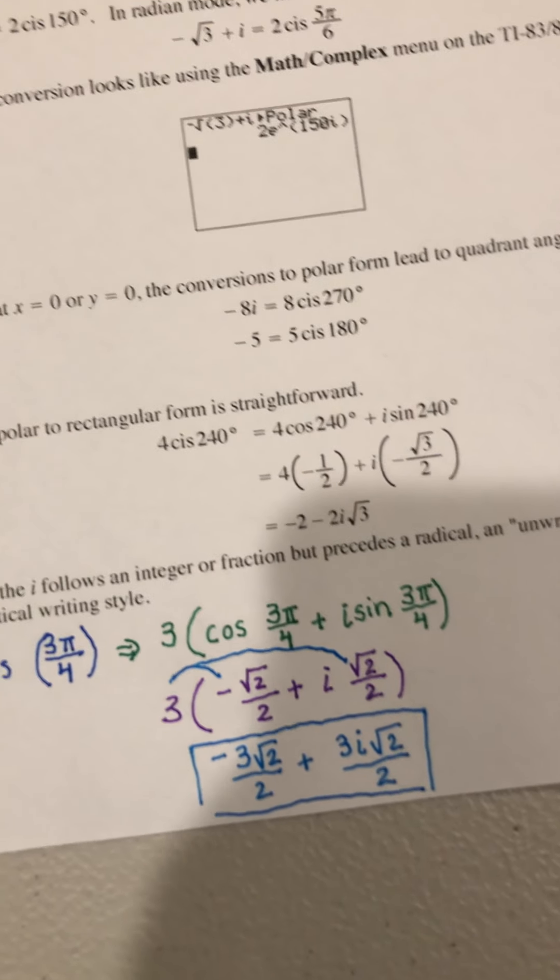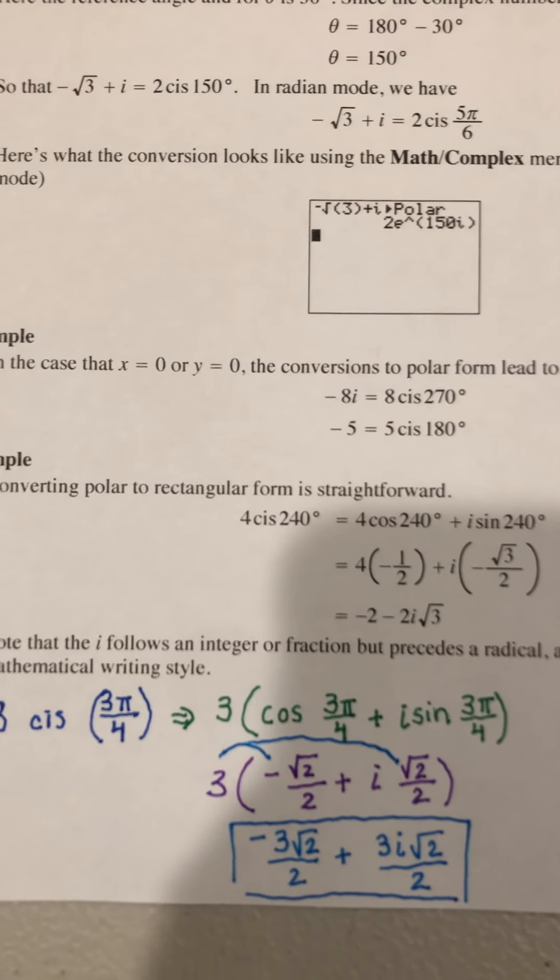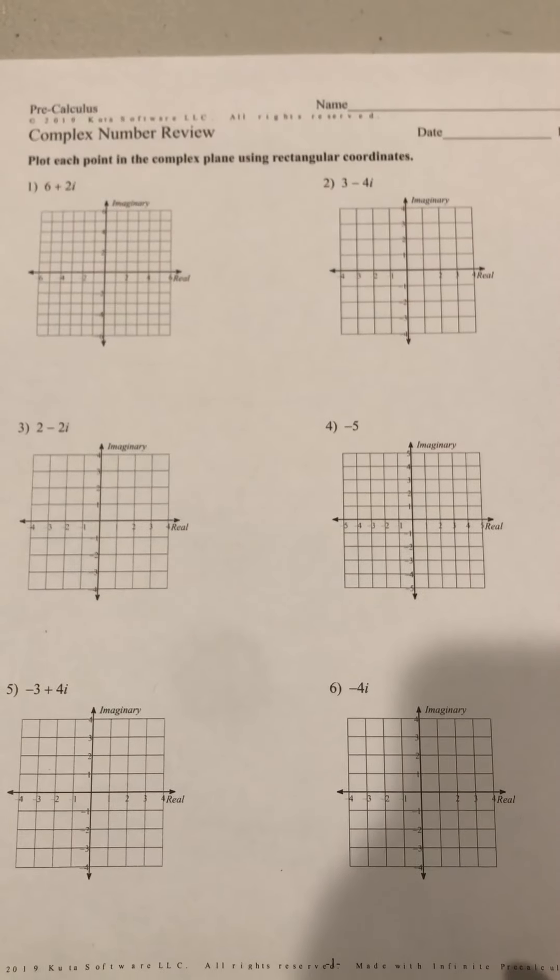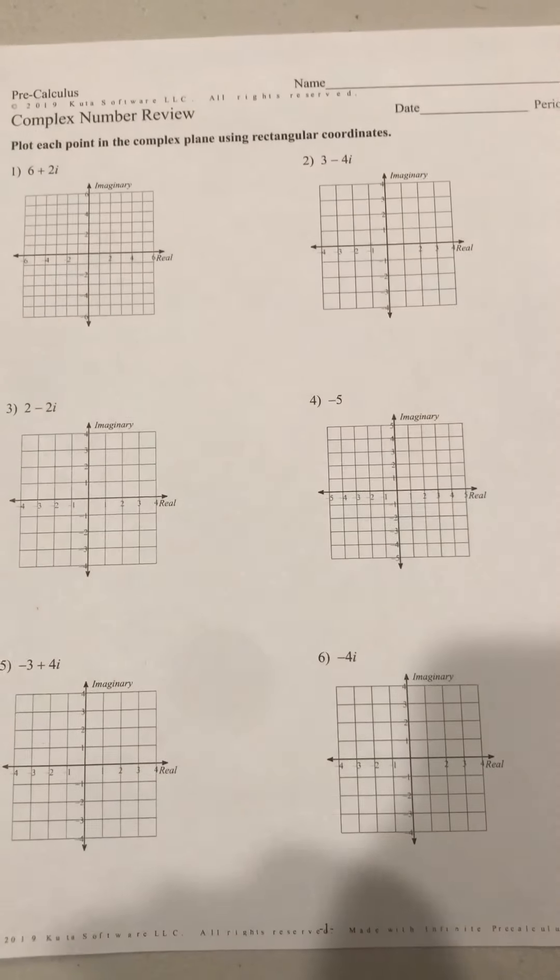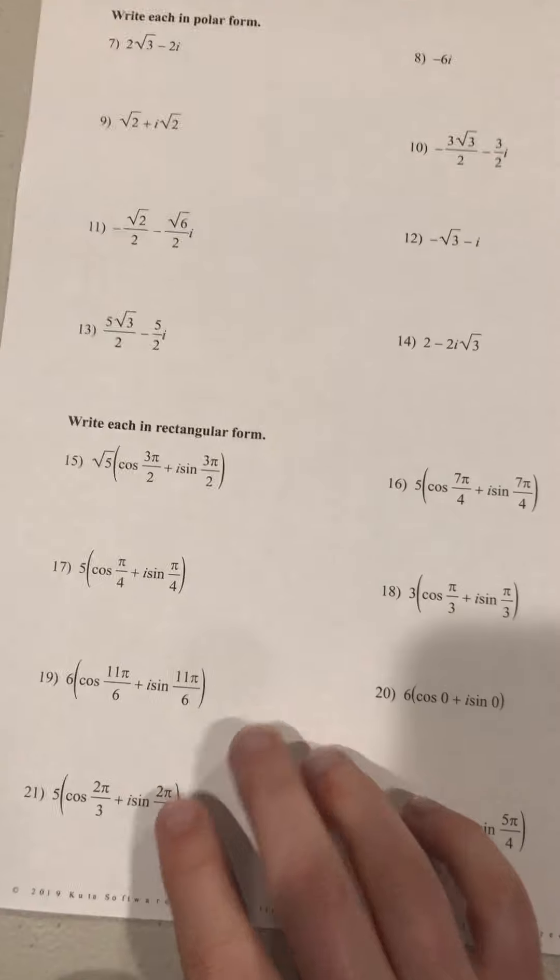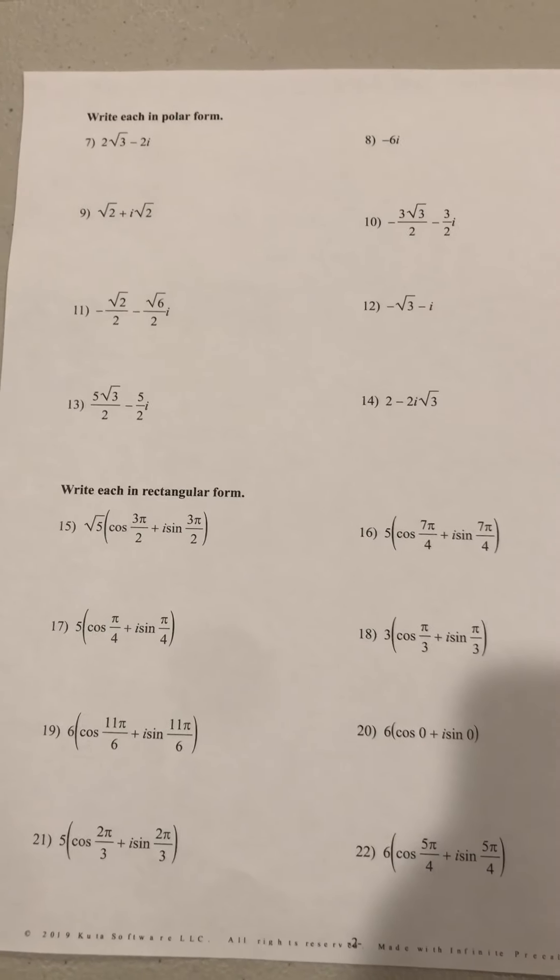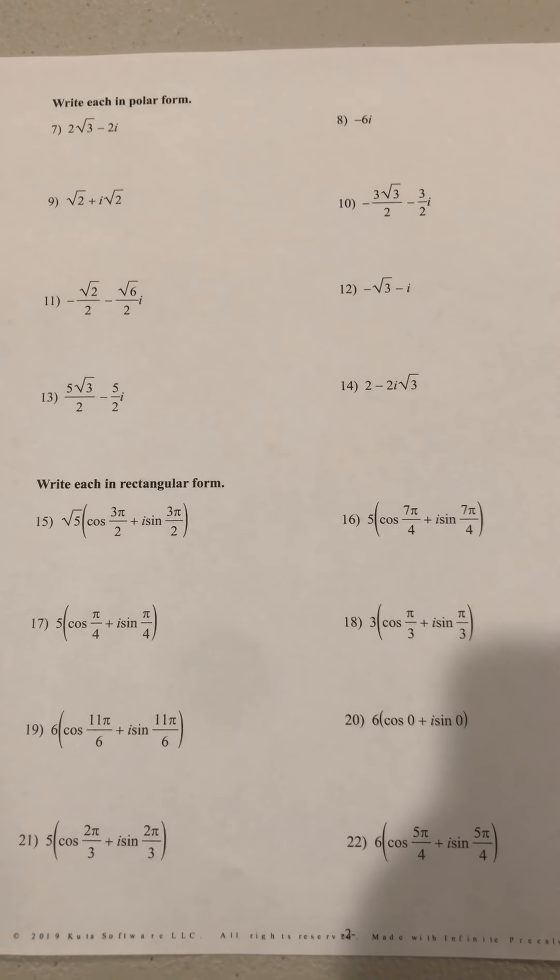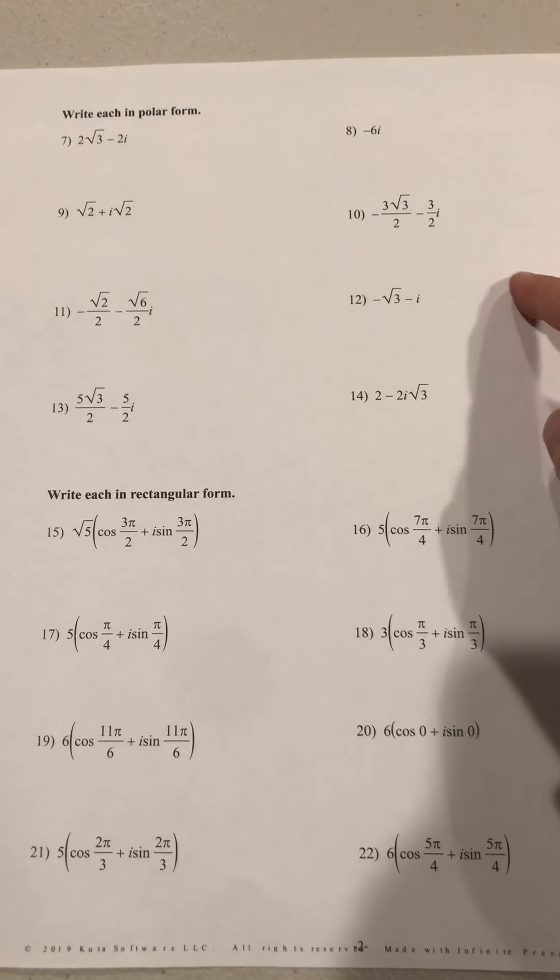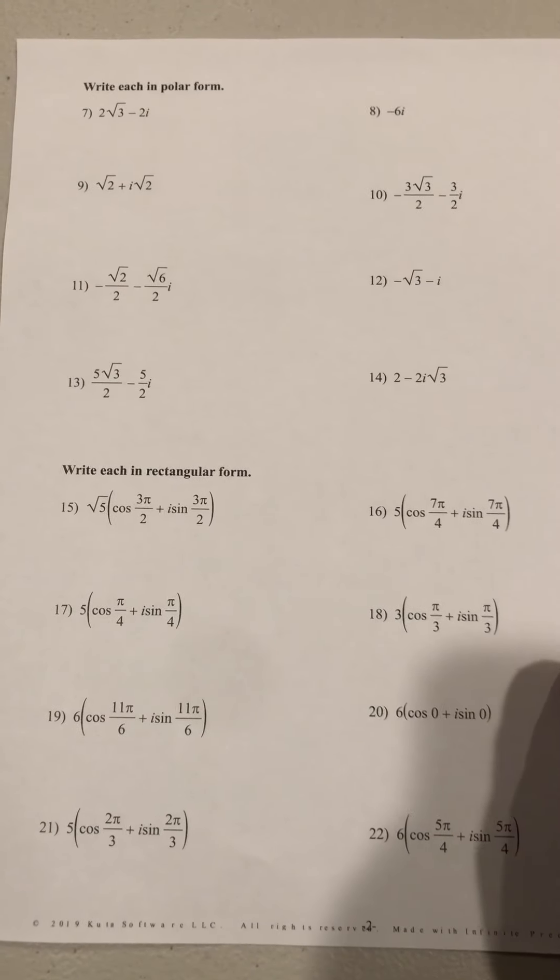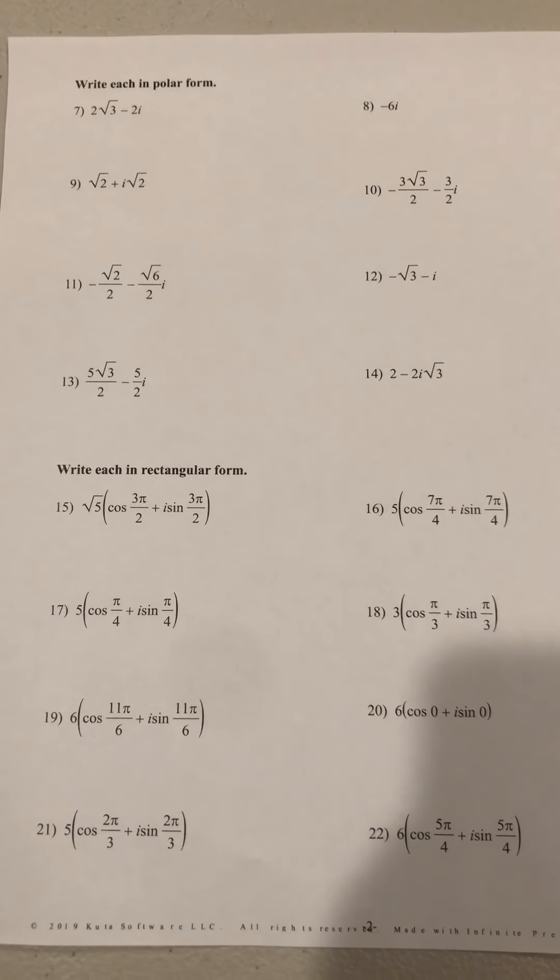I think that's about it. For your classwork, you are supposed to do the paper that looks like this. Complex number review, you have 6 graphs, and then on the back you have 8 problems converting each way. Convert to polar, convert to rectangular, and please make sure to show your work.